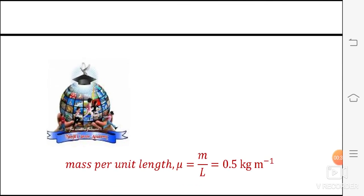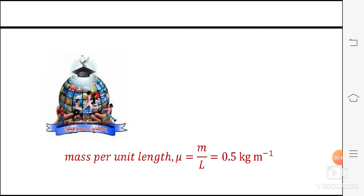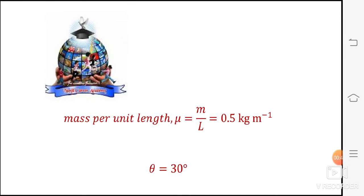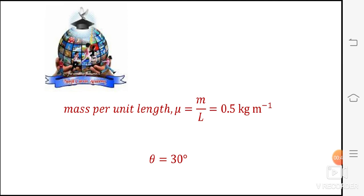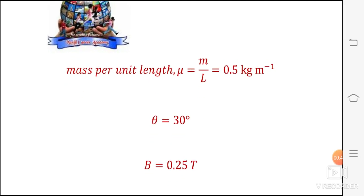First write the given data. Mass per unit length mu is equal to m by l is equal to 0.5 kg per meter. Theta angle of inclination is equal to 30 degree.